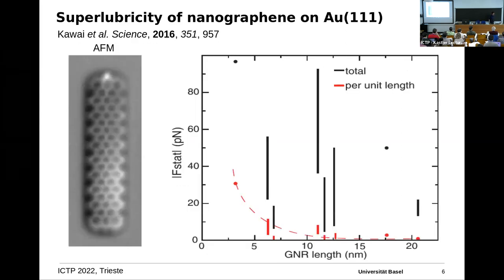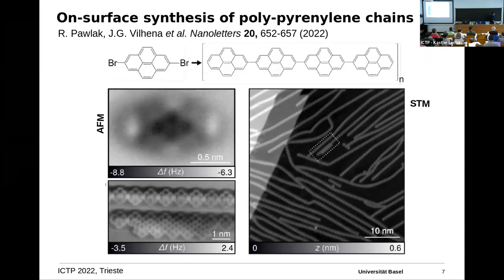My colleague demonstrated an experiment using such a nanoribbon. The AFM image shows the hexagonal rings of the graphene structure. He showed that as the ribbon length increases, the force to move it does not increase — a fingerprint of superlubric behavior of these ribbons on the gold(111) surface. This is an important result, as we can pull or slide these ribbons and they exhibit superlubricity.